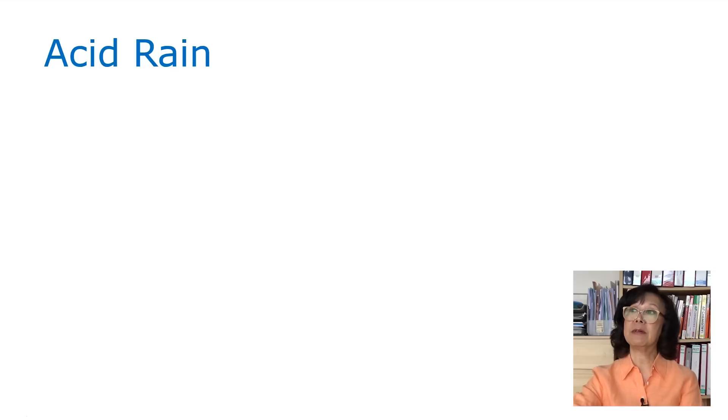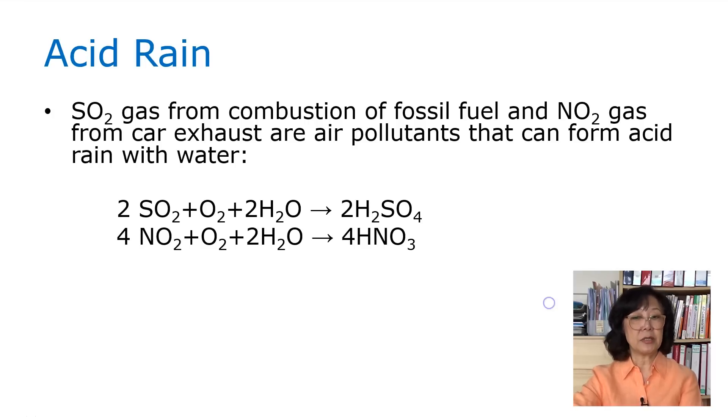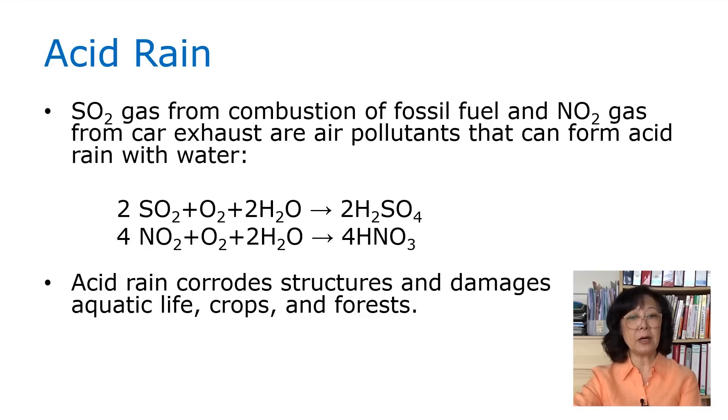Let's look at how does the acid act on the environment. We can think of acid rain. Acid rain is formed by sulfur dioxide gas from the combustion of fossil fuel and also from NO2 gas which is from car exhaust. They are air pollutants that react with water to form acid rain, such as sulfuric acid and nitric acid. The harmful effects of acid rain on the environment is that it can corrode structures, damage aquatic life, and crops and forests.